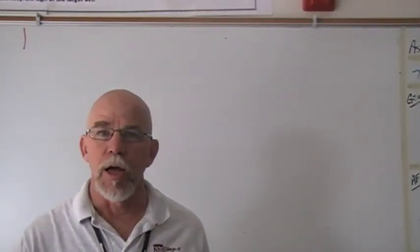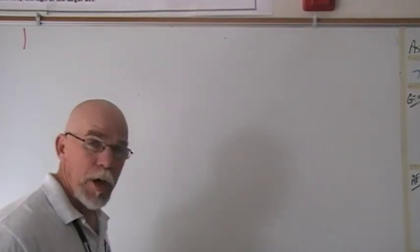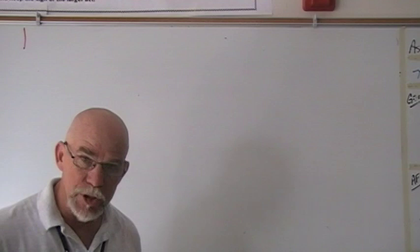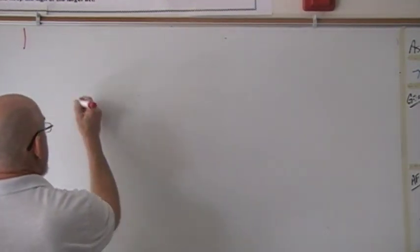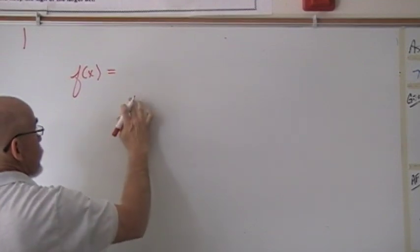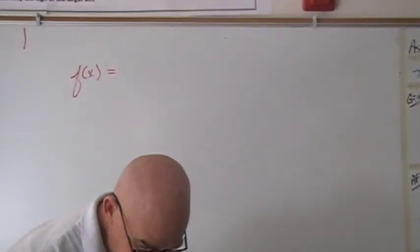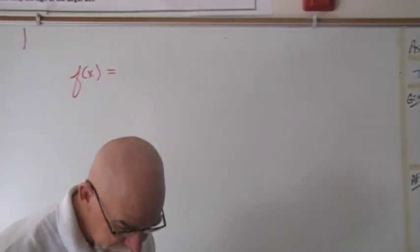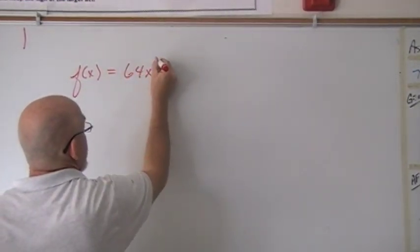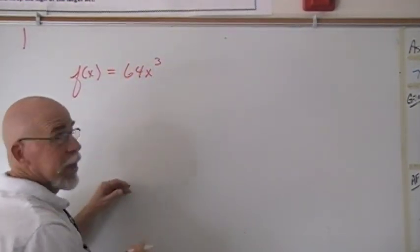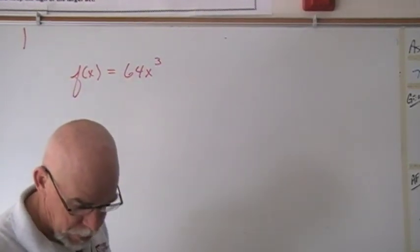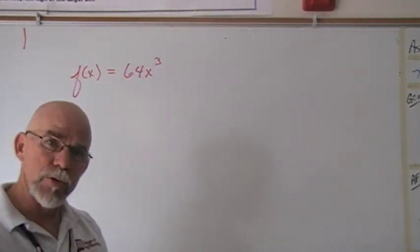We'll be looking at polynomials that all have integer coefficients. An example of that would be a polynomial with a leading coefficient — let's say 64x to the third — and every coefficient on every term has got to be an integer for the rational zero theorem to be true.